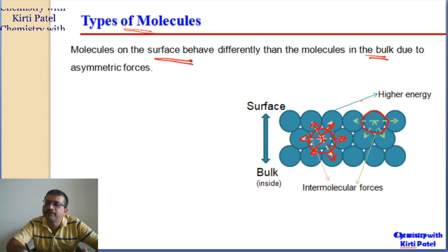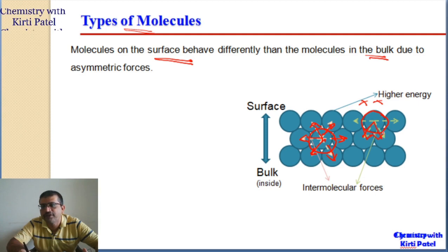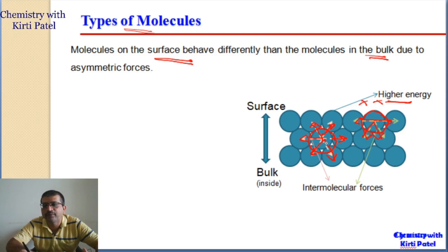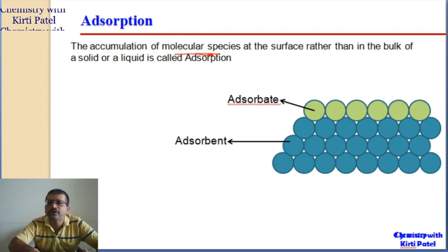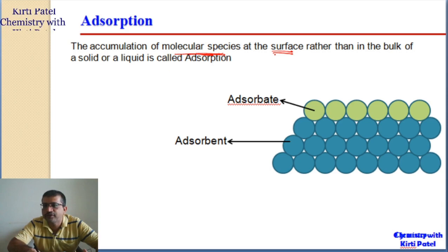When we look at surface molecules, there is nothing on top of them, so the force of attraction from the top is missing. Because of that there is a net inward pull among the molecules, and because of that the energy of the surface molecules increases. So surface molecules have higher energy than the bulk molecules. Because of this, surface molecules always tend to reduce this energy, and in the process they accumulate molecular species on the surface.